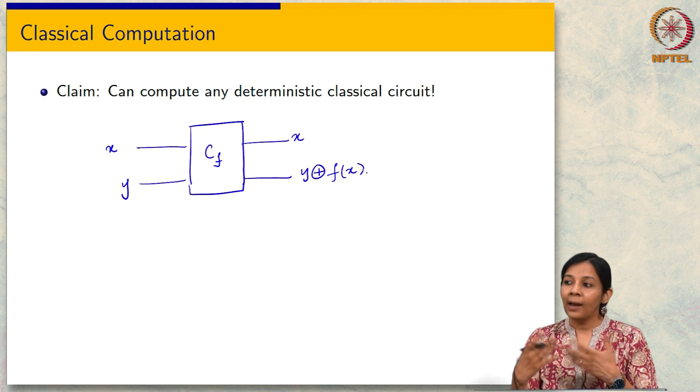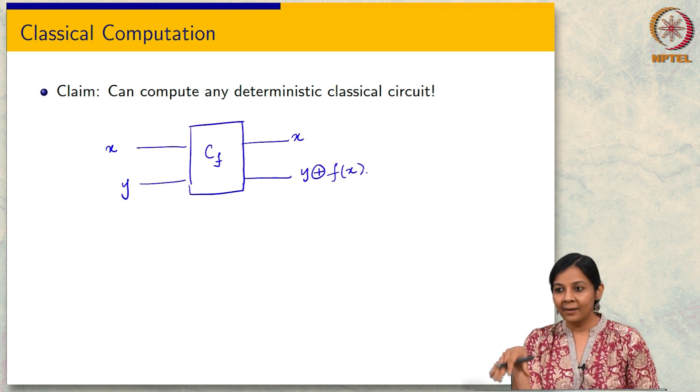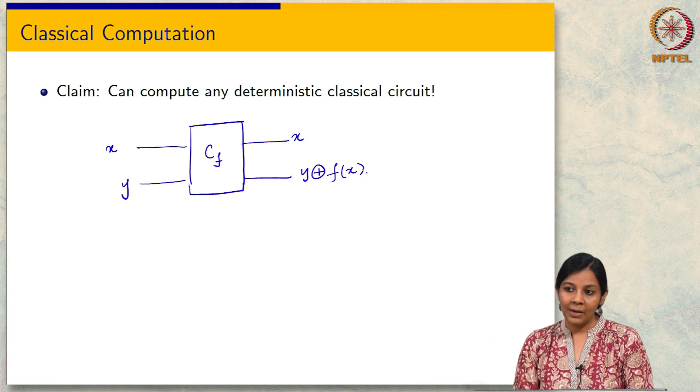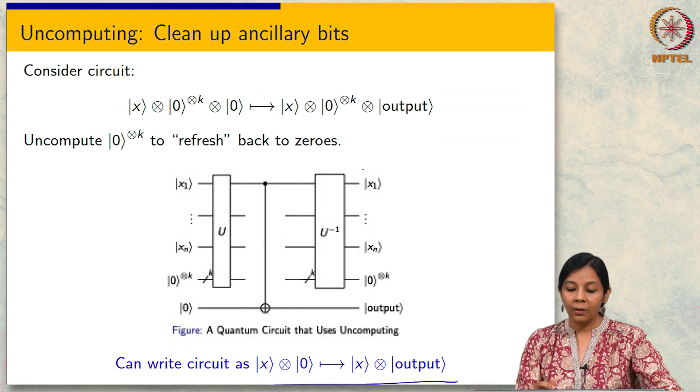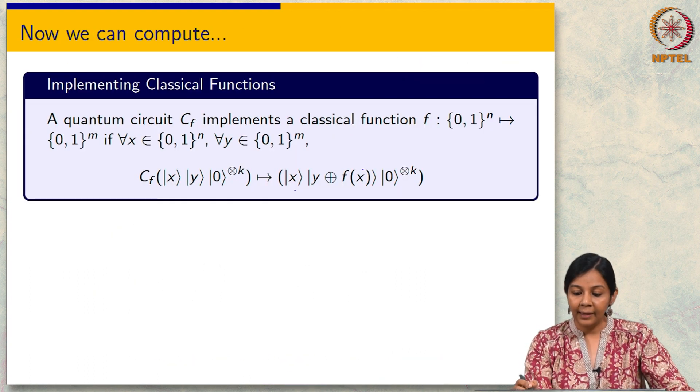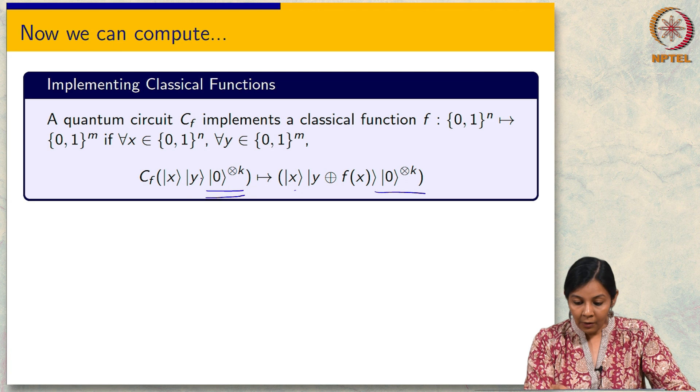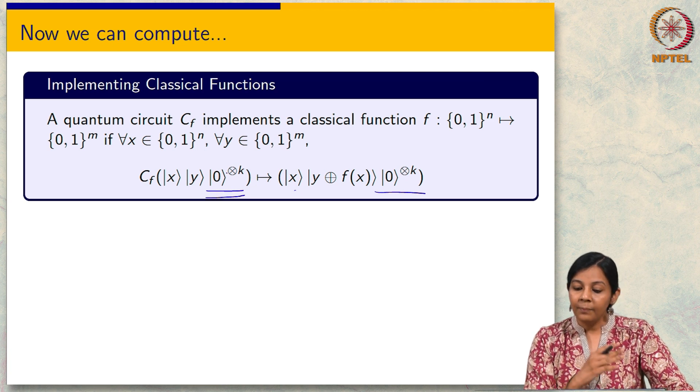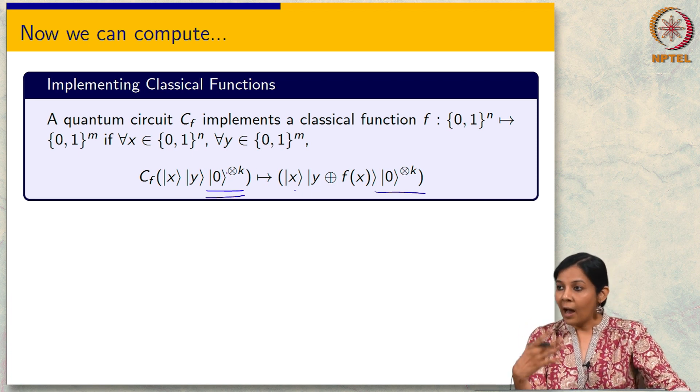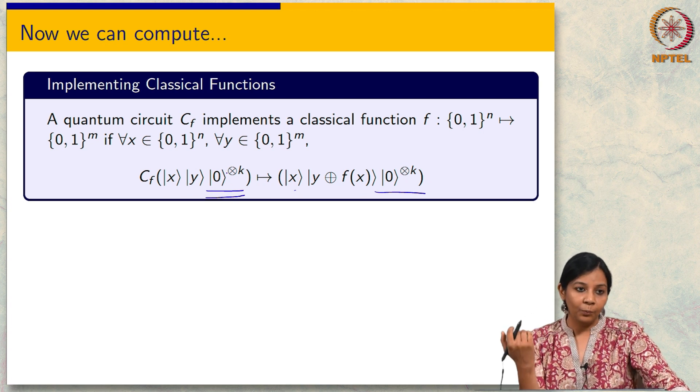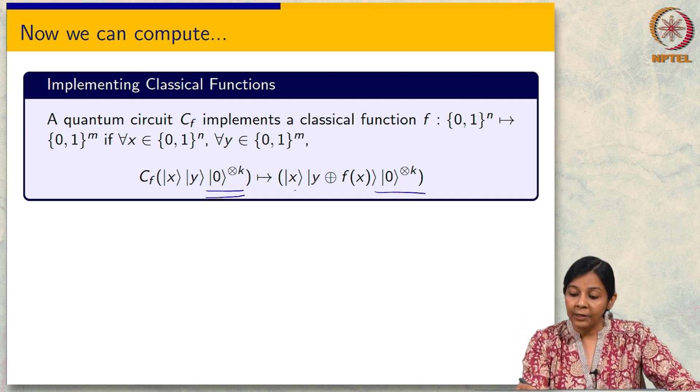The question is can we actually uncompute without ancillary bits? And the answer is that the uncomputation we were doing was for the sake of refreshing the ancillary bits. Of course, in general you can have fun by computing any U and U inverse and U and U inverse; it is like sort of going backwards and forwards in the same place. But the reason that we were interested in that was to say that these ancillary bits can be ignored.